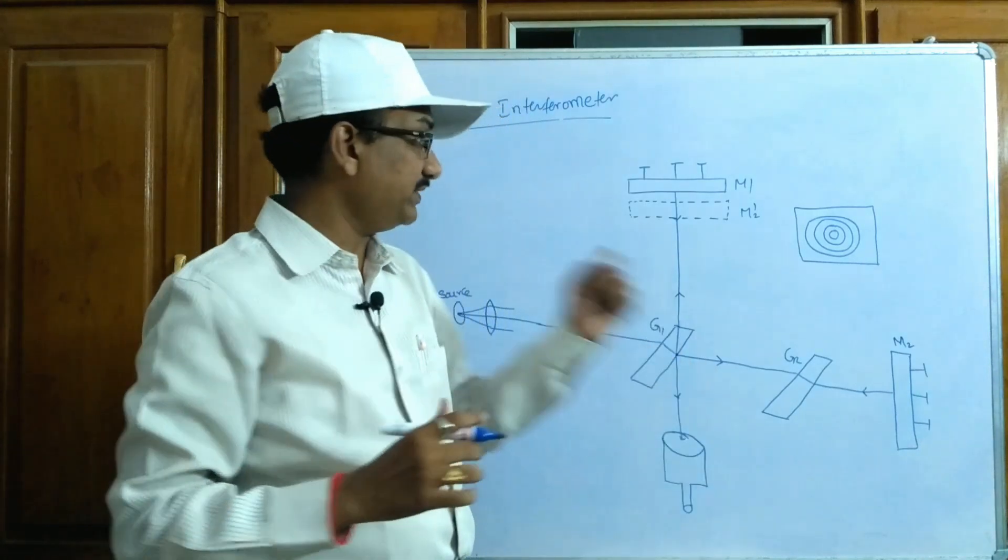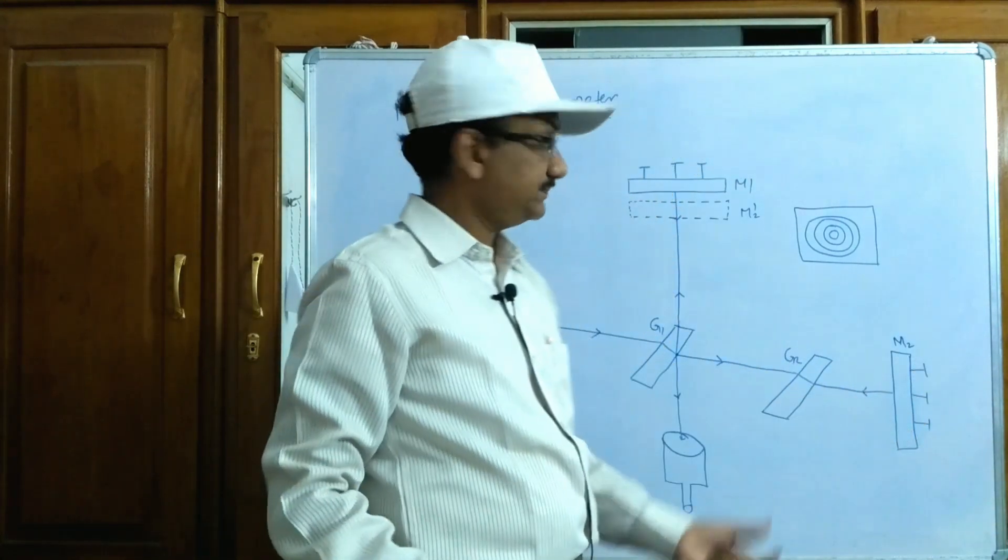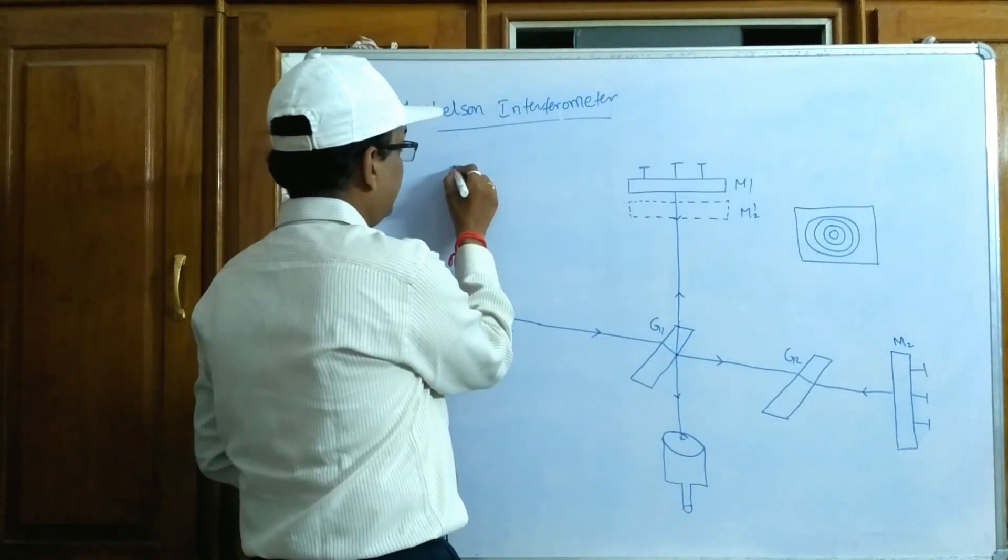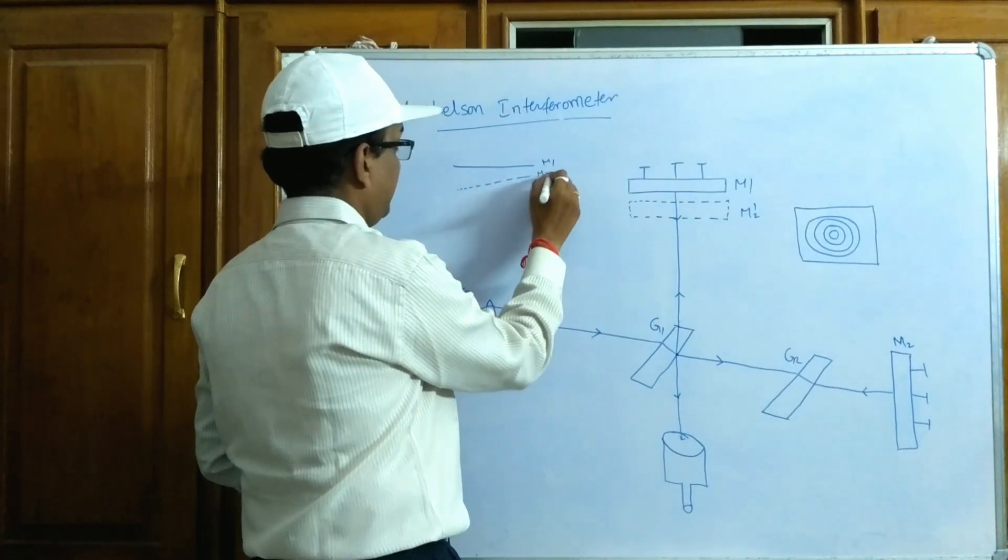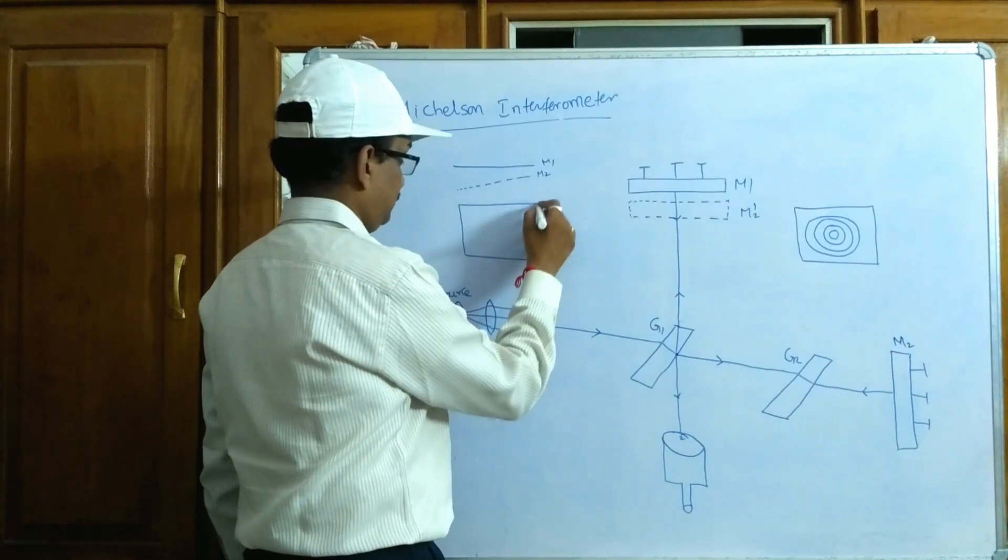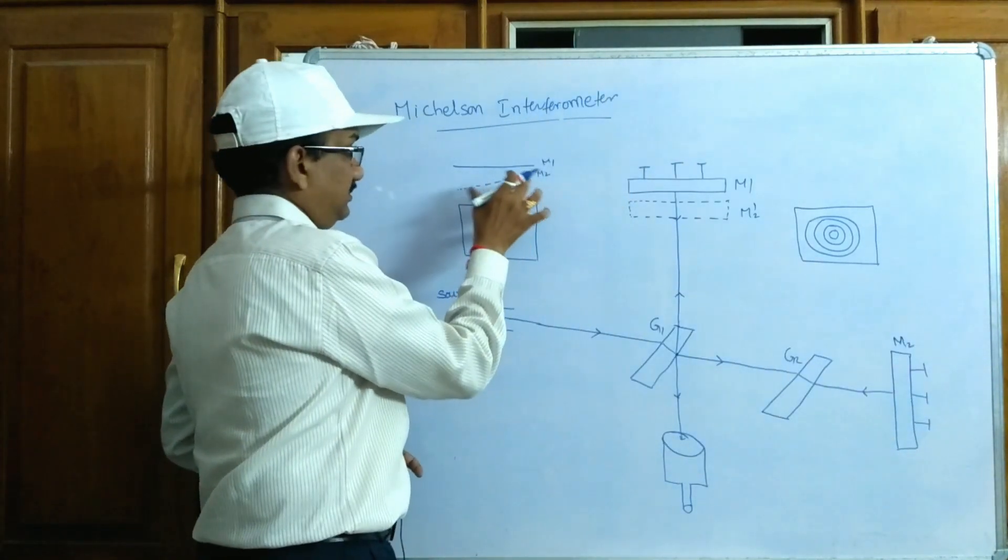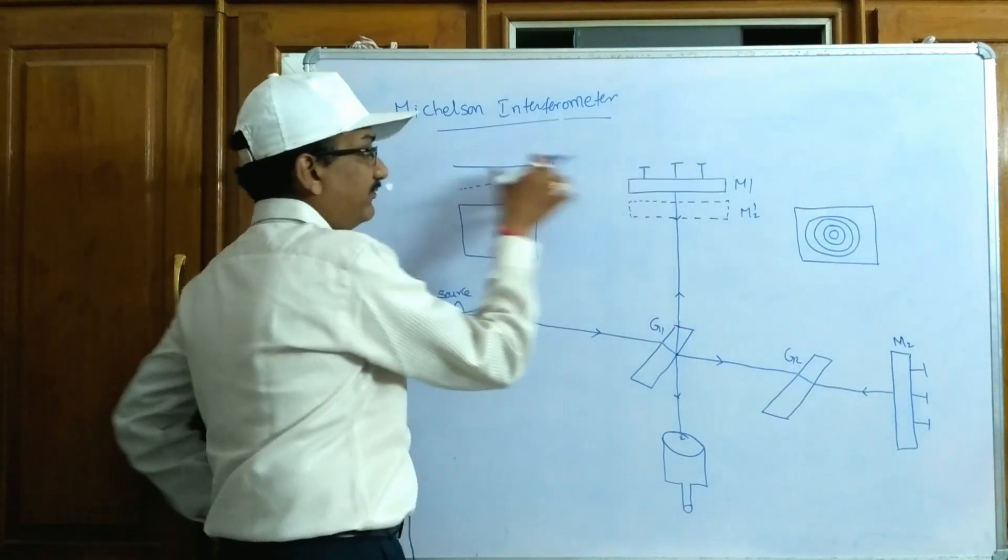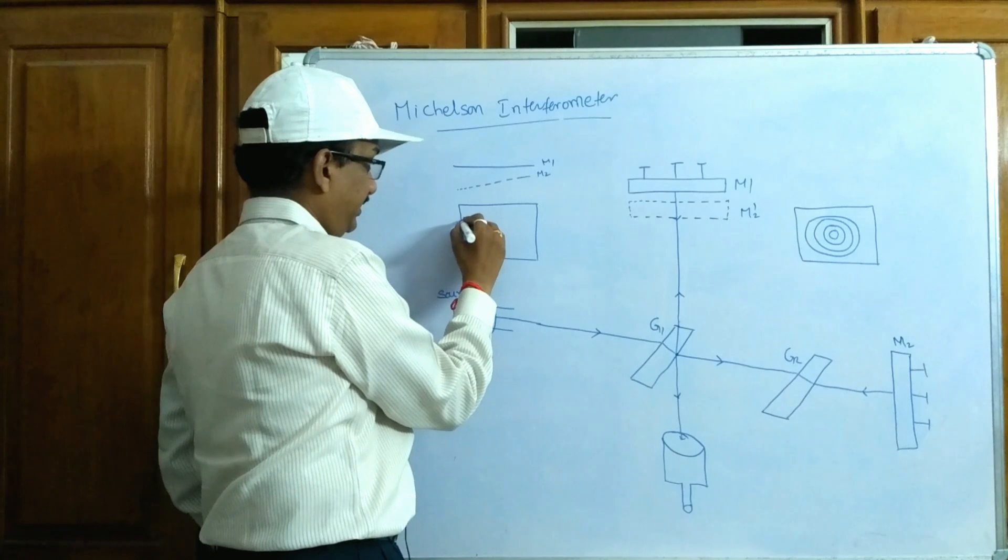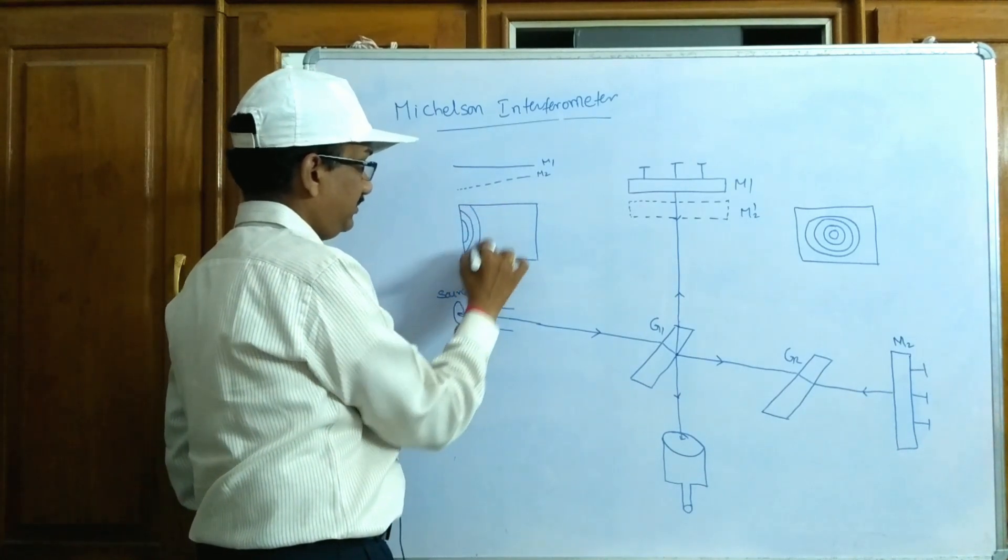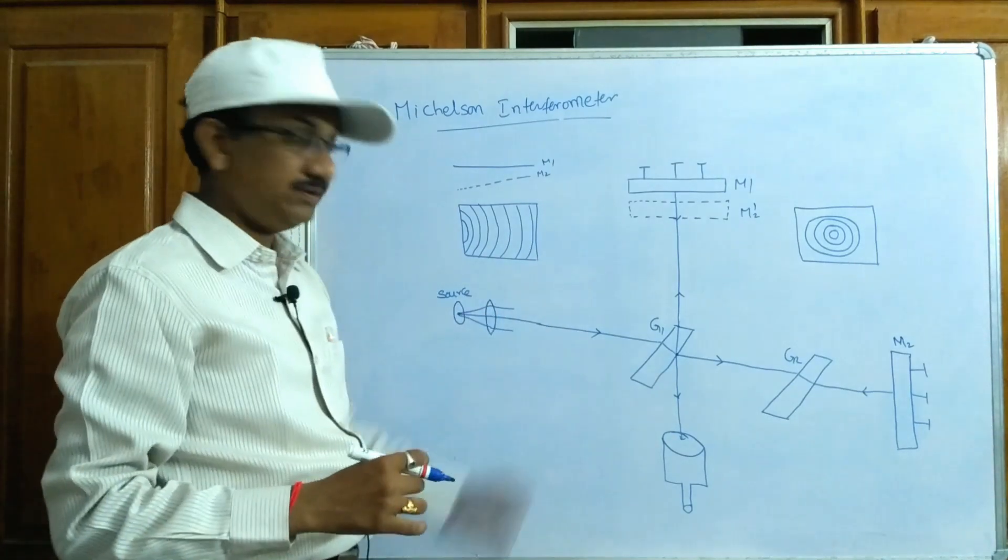If we tilt this mirror by adjusting these screws, then if this is M1 and M2 is tilted like this. In this mirror, this M1 is as it is but M2 is somewhat in this slanting position. It produces elliptical fringes like this. These are the elliptical fringes observed by this telescope.